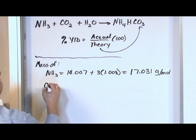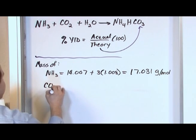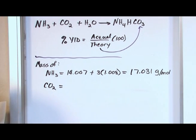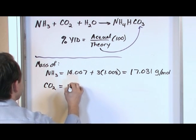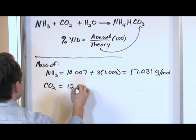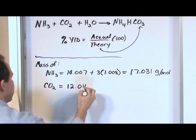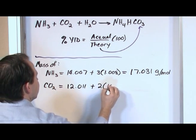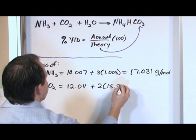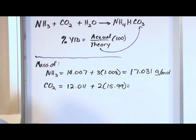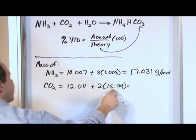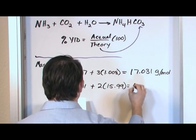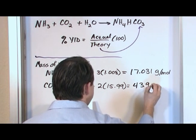Next we need CO2, since that's one of the reactants we're given. Carbon is 12.011 grams per mole from the periodic table, plus two oxygens at 15.99 each. Do this multiplication, add to the 12.011, and your calculator will give you 43.99 grams per mole.